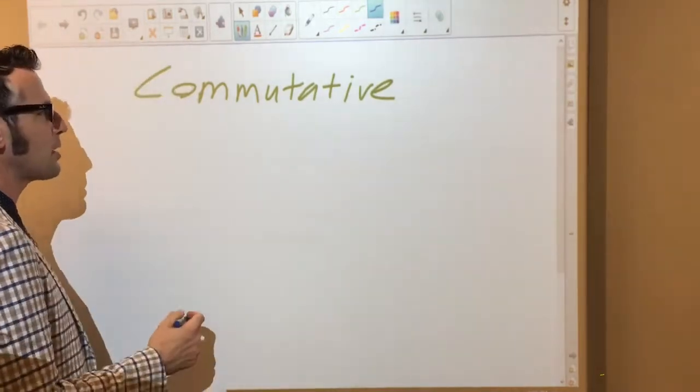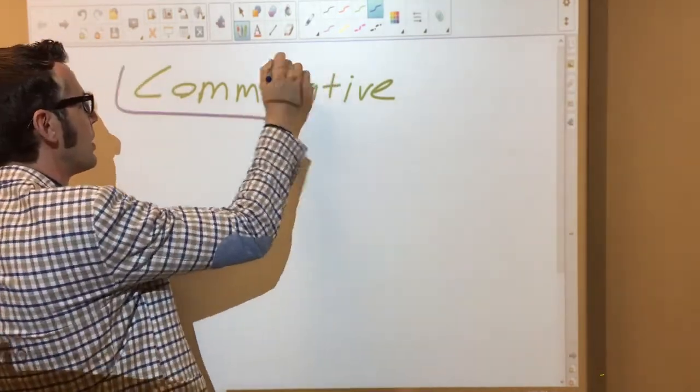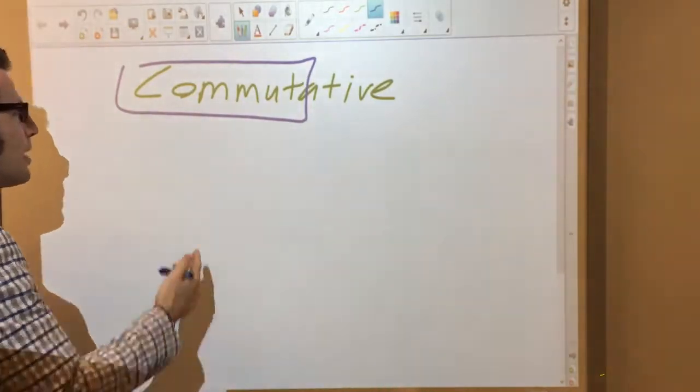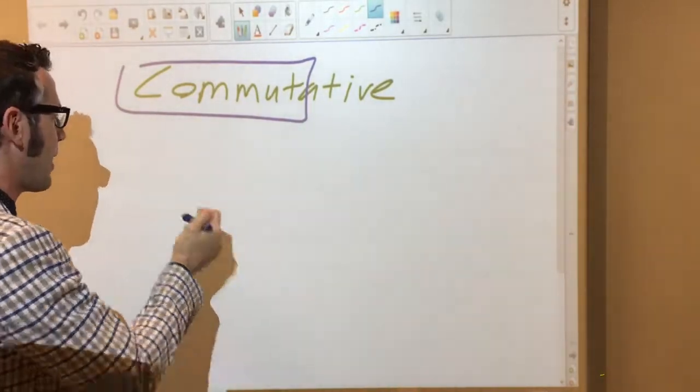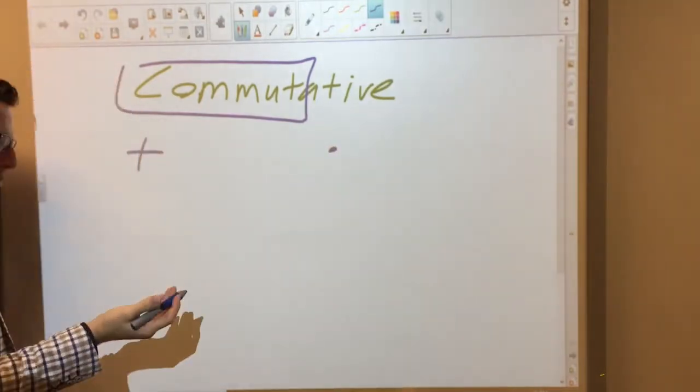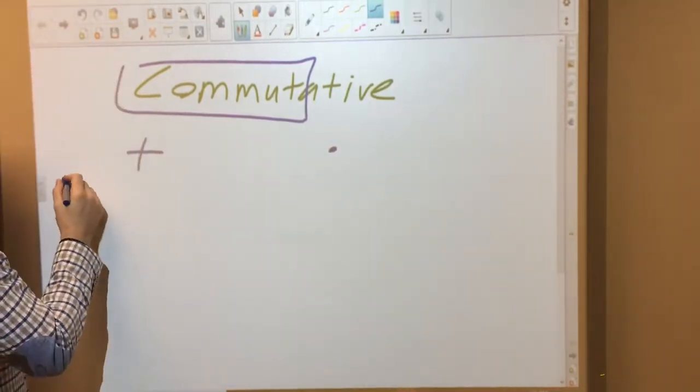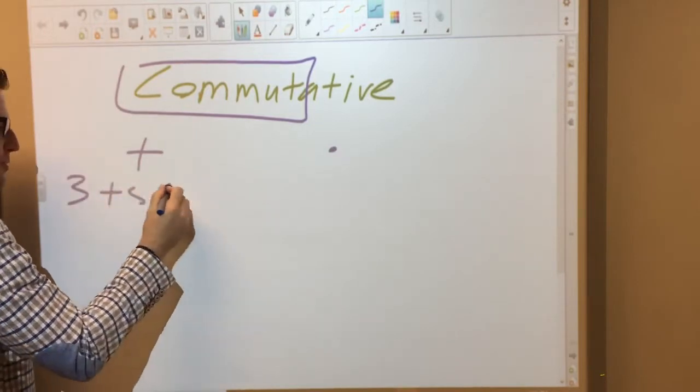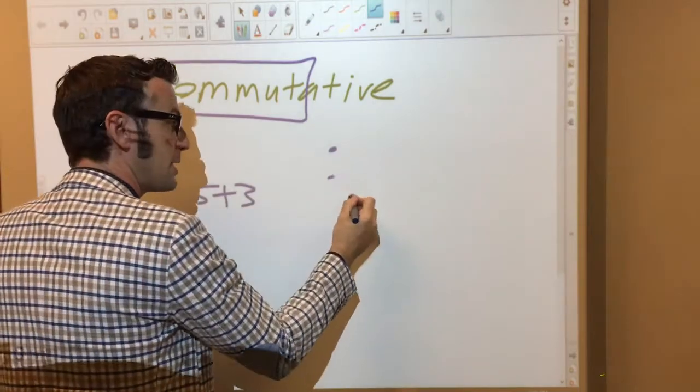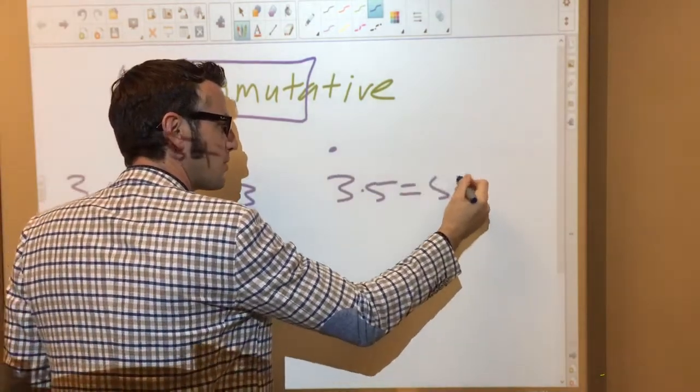The commutative property, you'll notice, has a root of commuting and going back and forth to your job. And the commutative property works like that for addition and multiplication. It goes back and forth. This is closed for our number system, so that means 3 plus 5 is going to give you the same thing as 5 plus 3. 3 times 5 would be the same thing as 5 times 3.